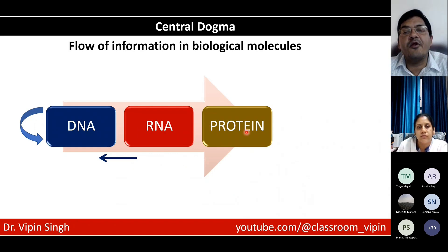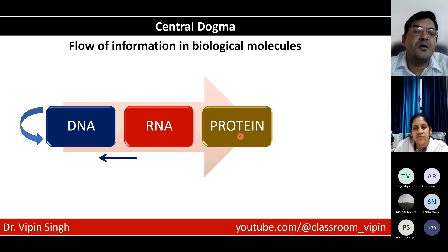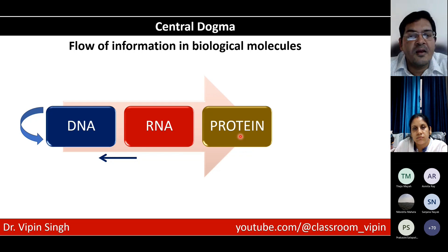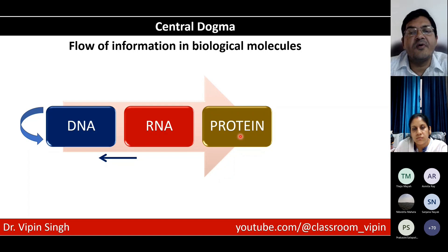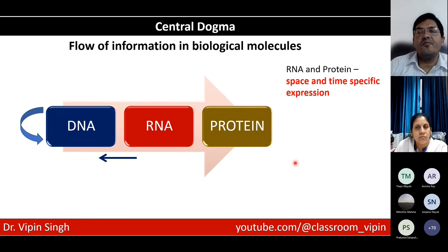RNA and protein are space and time specific. The RNA concentration can be different in the morning and different in the evening. Likewise, a protein expressed in the eye may not find expression in the liver, because the eye is meant for visual appreciation while the liver has more of a metabolic function. So these are space and time specific. Also, what is expressed in the morning may be different from what is expressed in the evening. So if the RNA is different, the protein concentration would also vary.